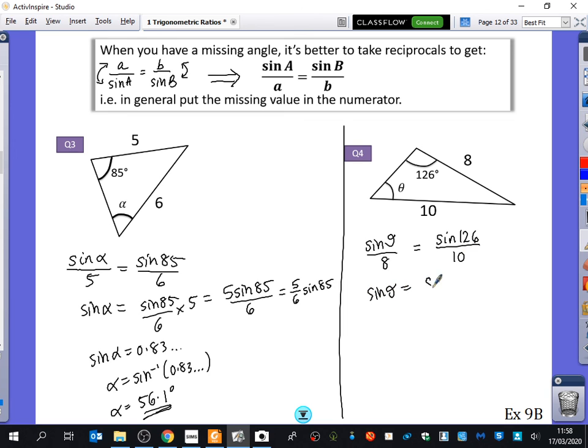So, sine theta is this. Sine theta is this. So, theta is the inverse sine of this, which is 40.33. For some reason, I've switched back to doing one decimal place. Pretty straightforward, okay?